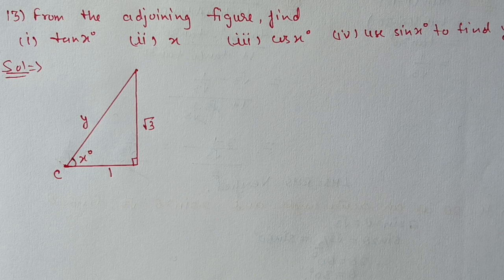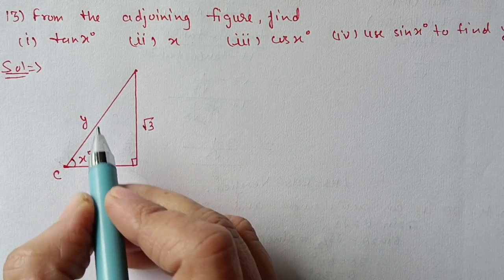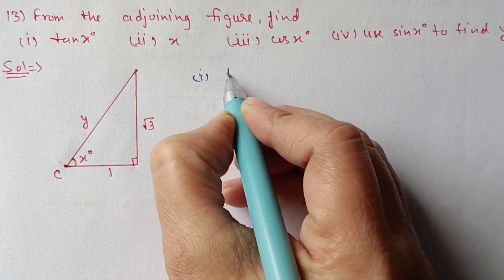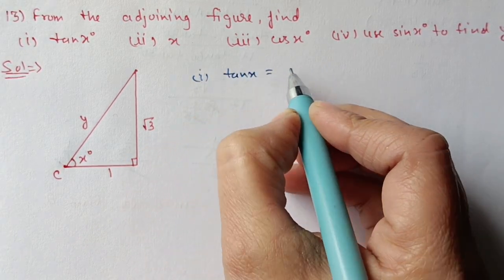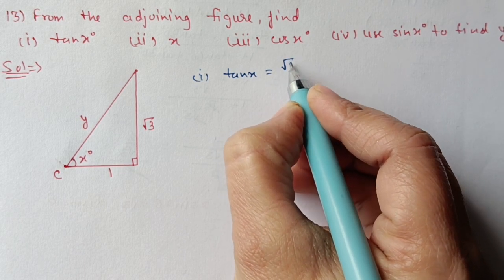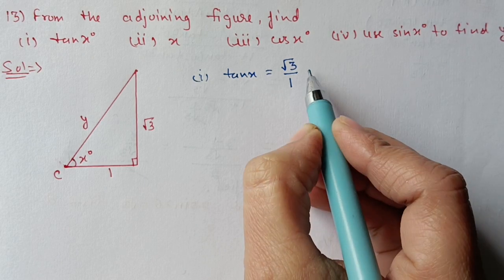Question 13: From the adjoining figure, find the value of tan x, x, cos x, and use sin x to find y. First we will find out tan x. Tan x is equal to perpendicular by base. The perpendicular is root 3 and the base is 1.